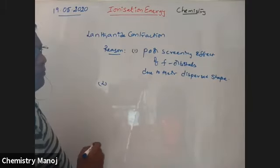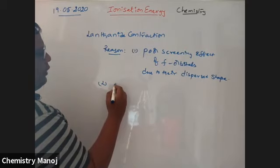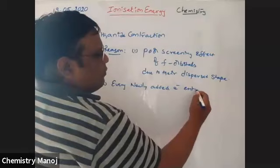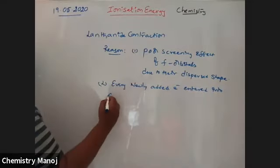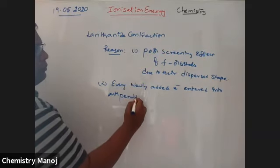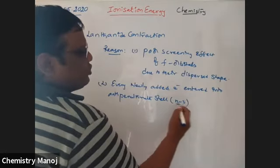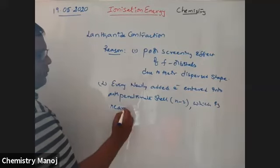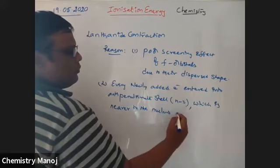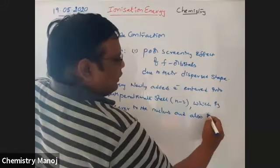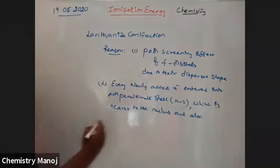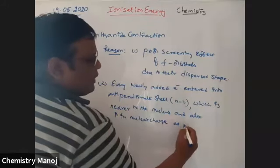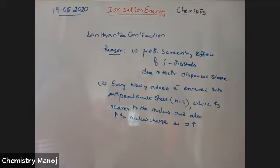The second reason is that every newly added electron enters into the anti-penultimate shell, that is the N-2 shell, which is nearer to the nucleus. Also, there is an increase in nuclear charge as the Z value increases. These are the two reasons for lanthanide contraction.